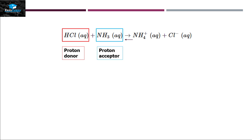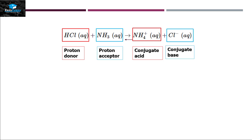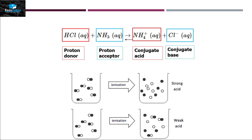If we think of this as a two-way reaction, then the ammonium ion has the ability to release a proton, so it acts as a conjugate acid, and the chloride ion can accept that proton, so it acts as a conjugate base. From this reaction we can understand the concepts of strong acid and weak acid, or strong base and weak base.